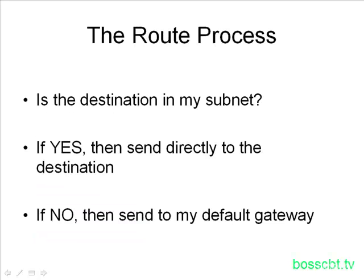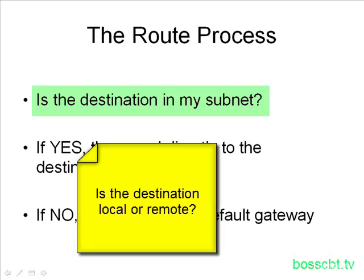The routing process on a computer is relatively simple, and it begins with a computer looking at the destination IP address of the packet it wants to send, and it asks itself a question: is the destination in the same IP address subnet that I'm in, or is it in a different one? In other words, is the destination local to me — on the same network segment — or is it remote, somewhere else on the network?